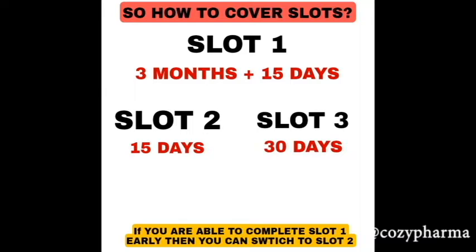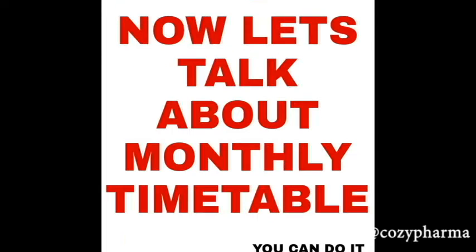How to cover the slots: slot one will be three months plus 15 days, because we sometimes take extra time and slot one topics are huge. Slot two is for 15 days, since those less-asked topics can just be read two or three times. Slot three is 30 days for revision and mock tests. If you finish slot one before the allotted time, you can move on to slot two and then slot three. Remember — it's a long journey, but if you take smaller steps you can find success.